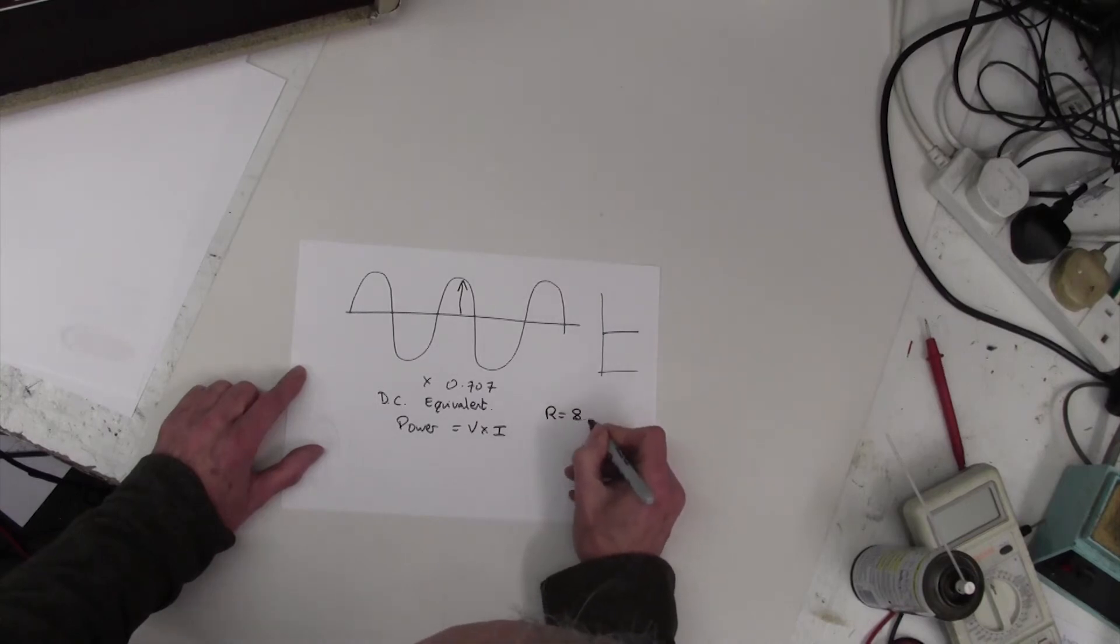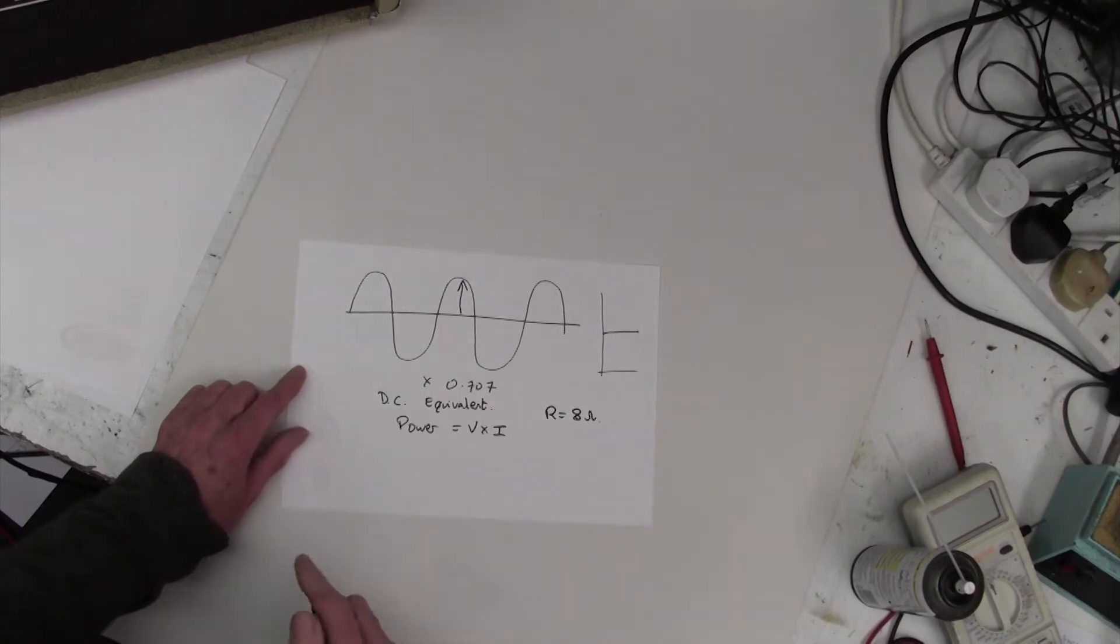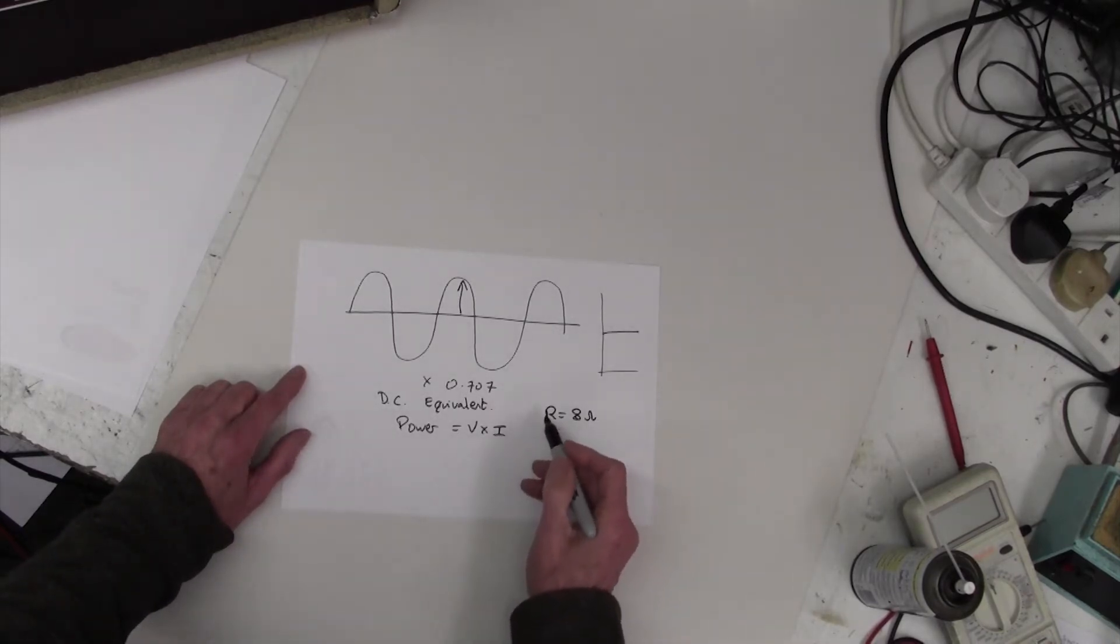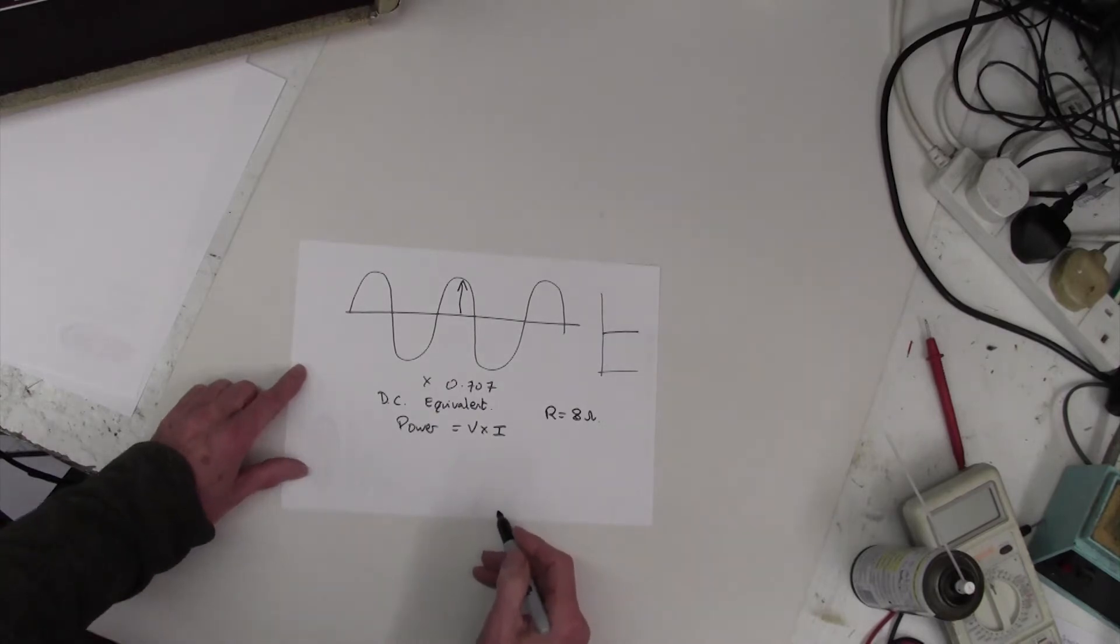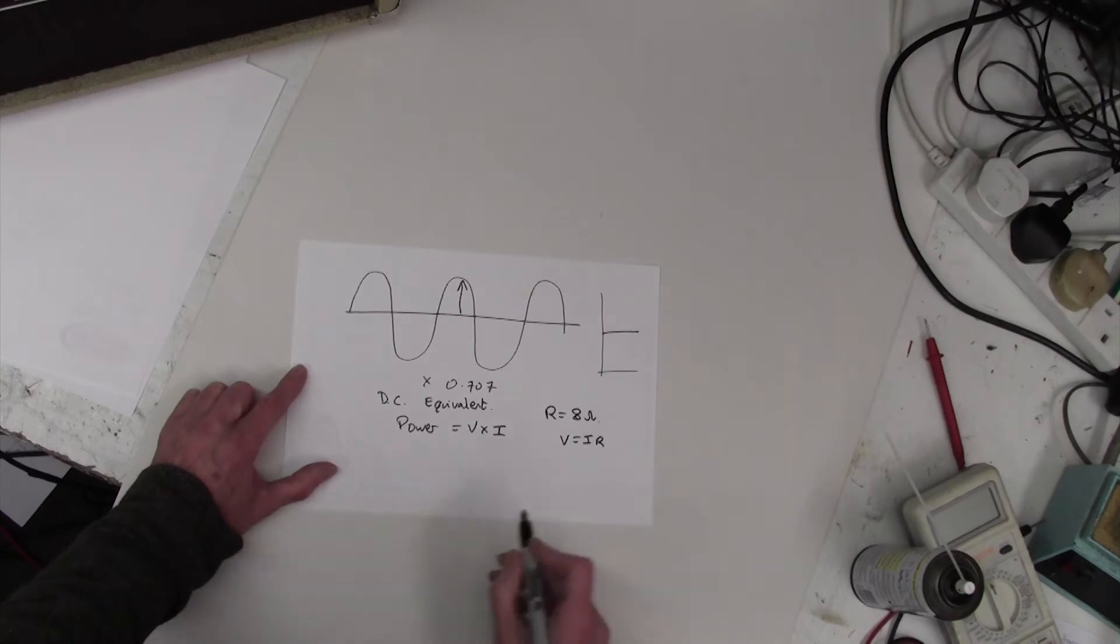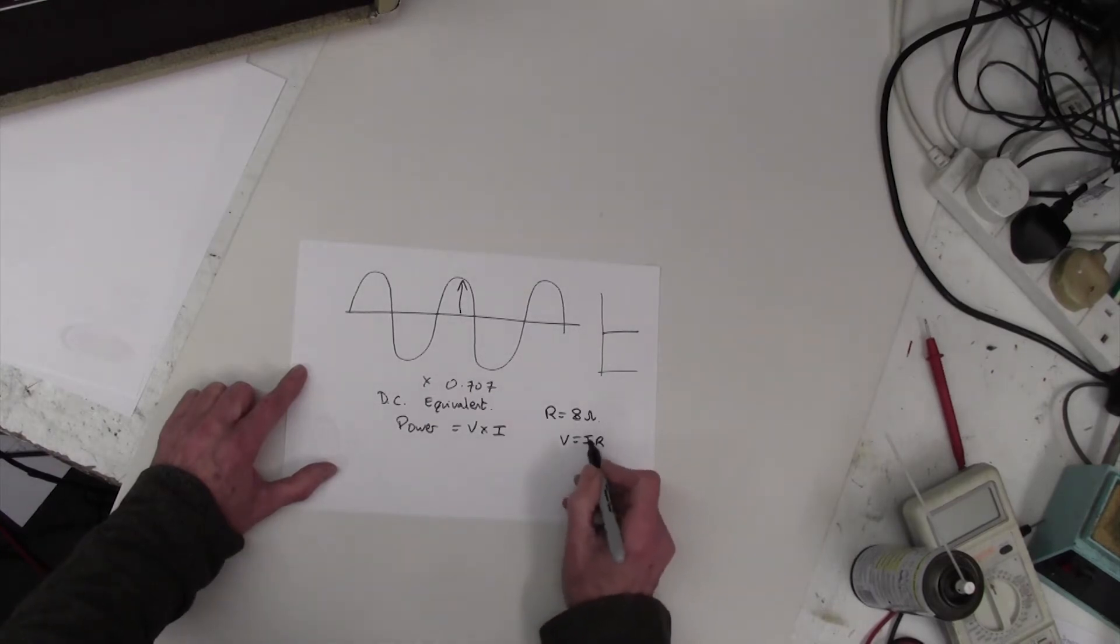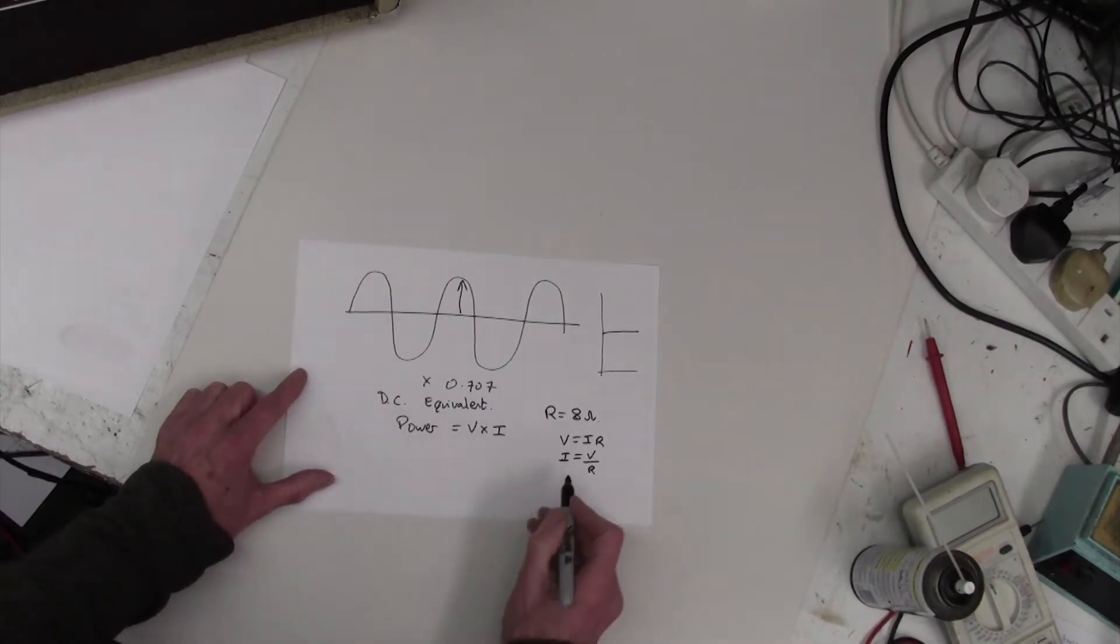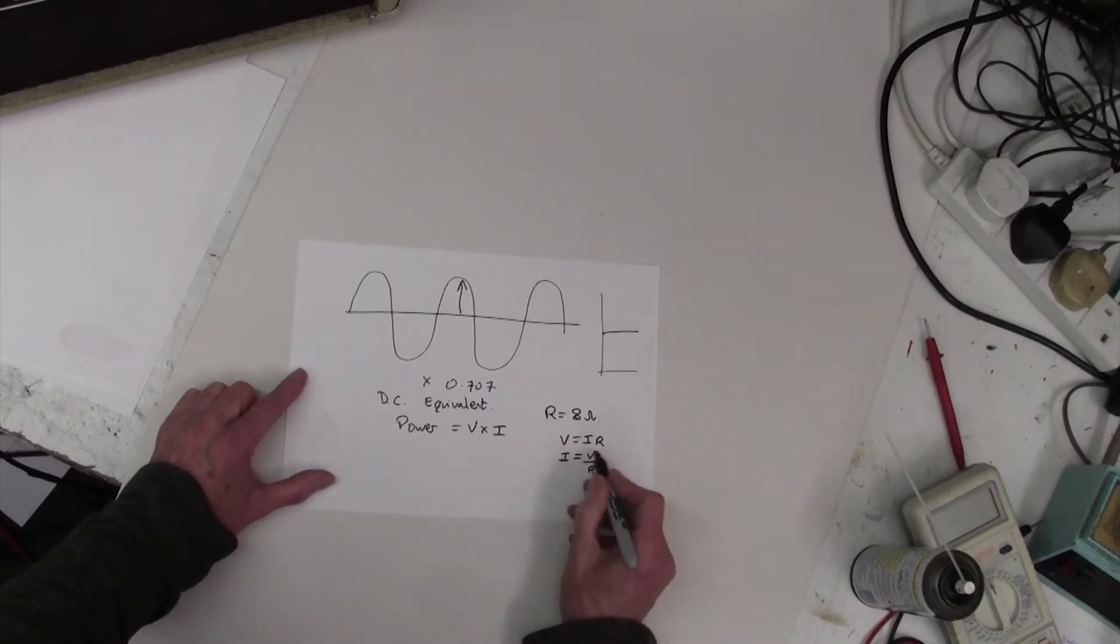Well there's a relationship between I and R, which is given by Ohm's law. V equals I R. Volts equals current times resistance. We can do a little bit of basic maths here and rewrite that for I by bringing this R underneath here. So I equals V over R. The current equals voltage upon resistance.